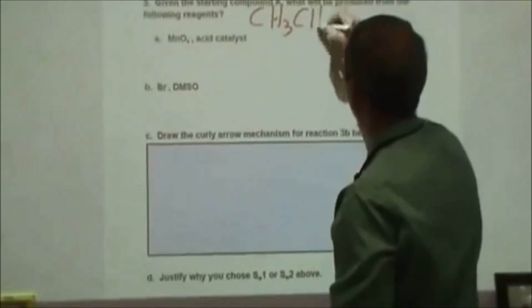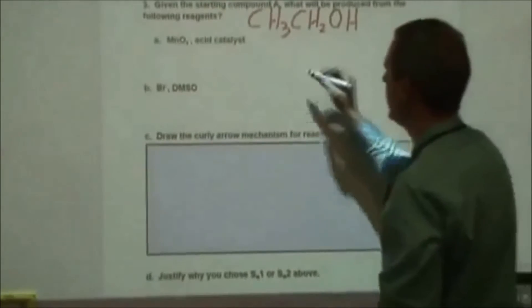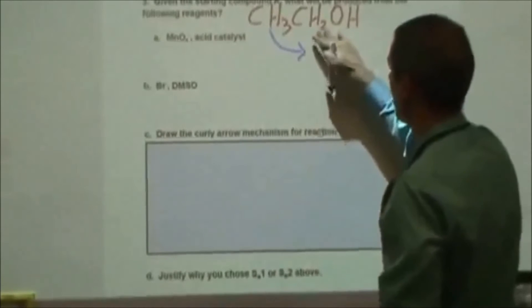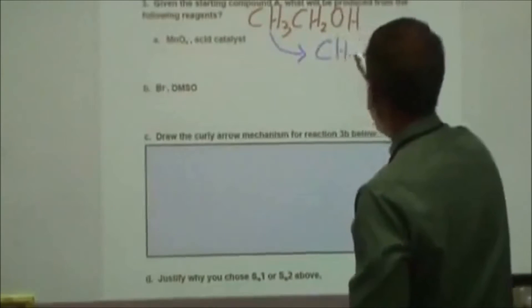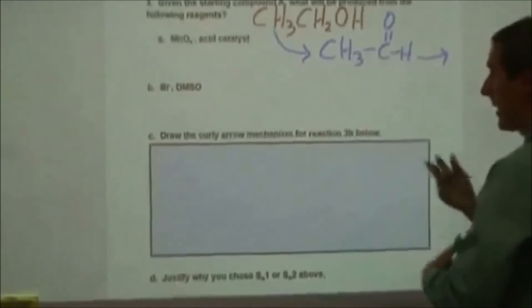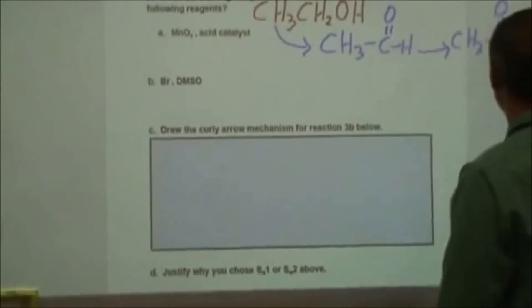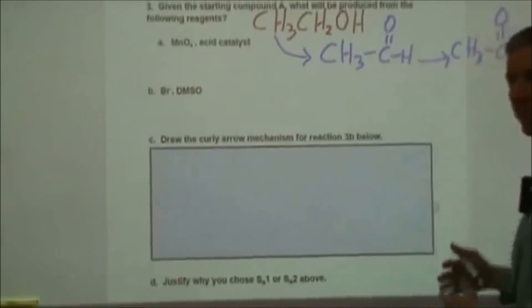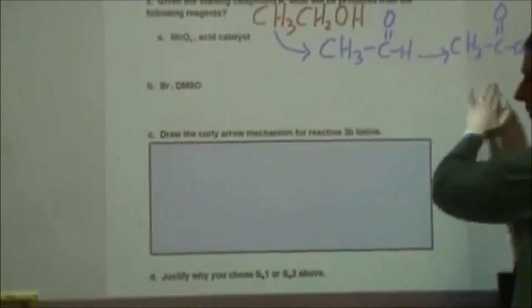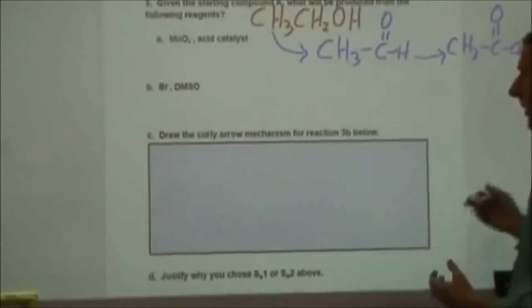Down in number three, we start with ethanol and it asks what we get from the following reagents. With MnO4⁻ and an acid catalyst we're doing an oxidation. This is a primary alcohol, so it starts by turning into an aldehyde, and then if we reflux that and let it continue to react it will end up making a carboxylic acid — ethanoic acid. We'll likely get some of both regardless, and if you wanted just one you could separate them by their boiling points through a distillation apparatus.